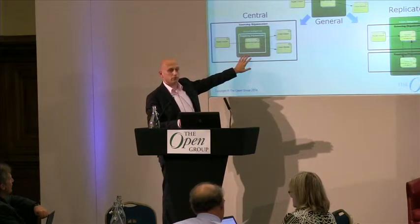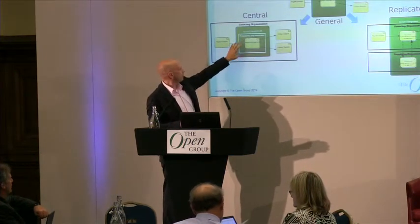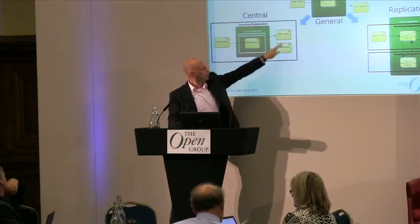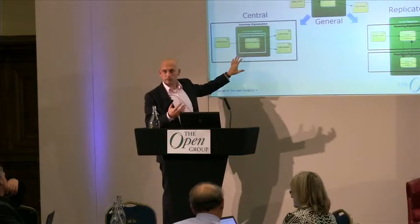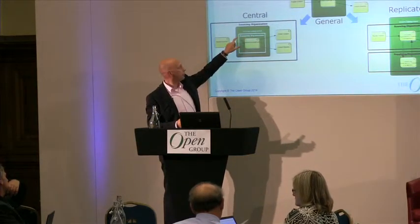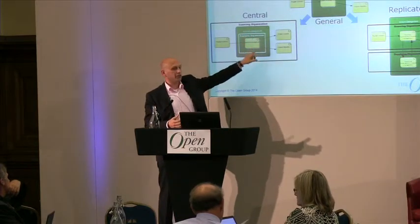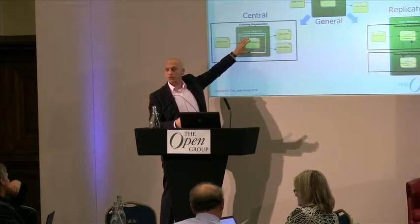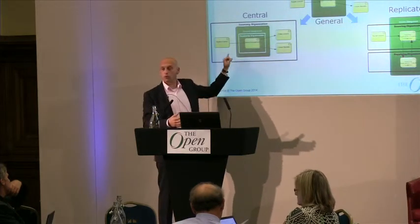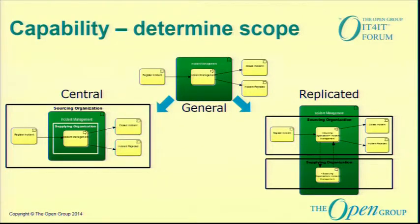The other patterns are also not complicated. In the central setup, once you add the organizational boxes around it, the supplying organization focuses on the same process internally, and the sourcing organization owns the whole capability including the triggers going in and out. That's how we describe the central setup. Then on the other side, we have the replicated version.